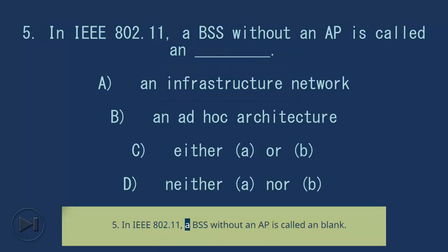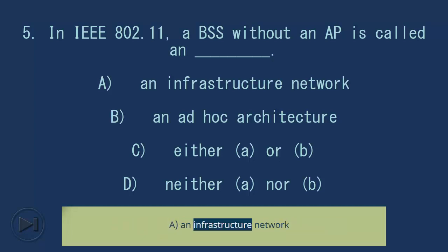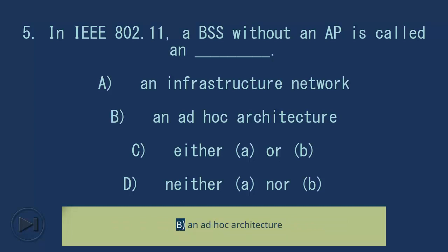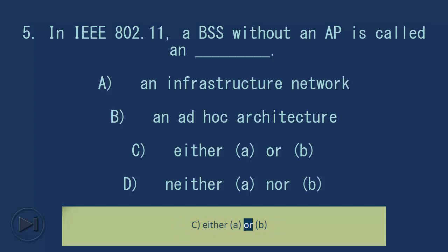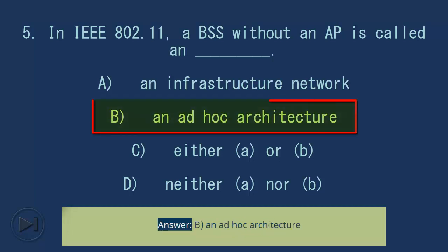Question 5: In IEEE 802.11, a BSS without an AP is called blank. A. An Infrastructure Network, B. An Ad Hoc Architecture, C. Either A or B, D. Neither A nor B. Answer: B. An Ad Hoc Architecture.